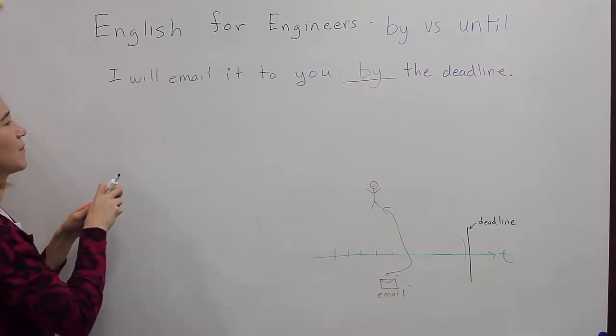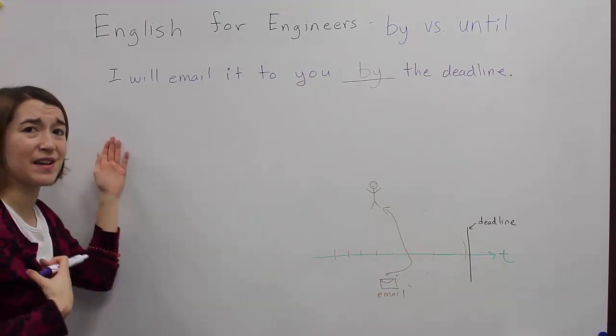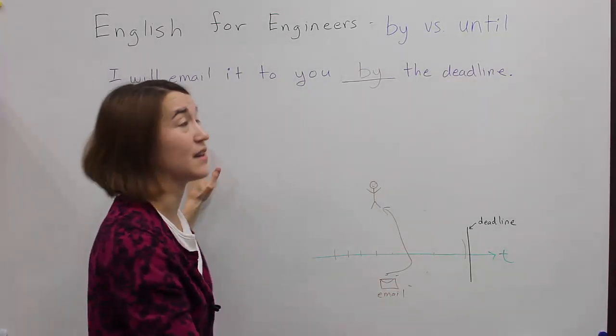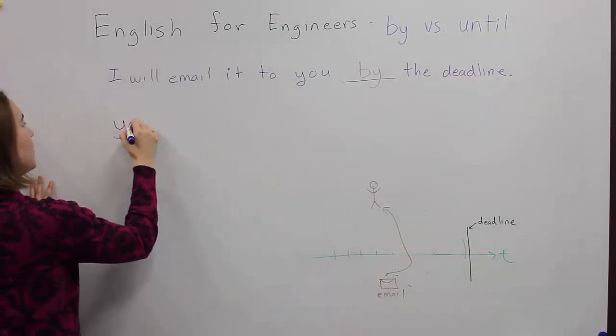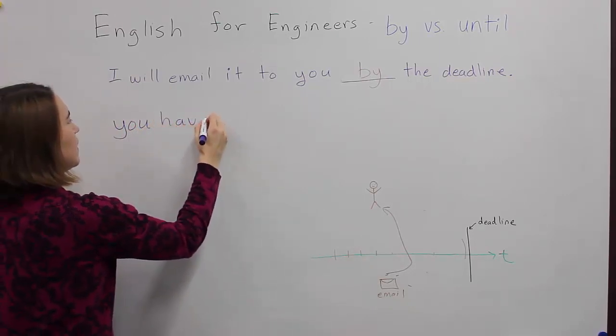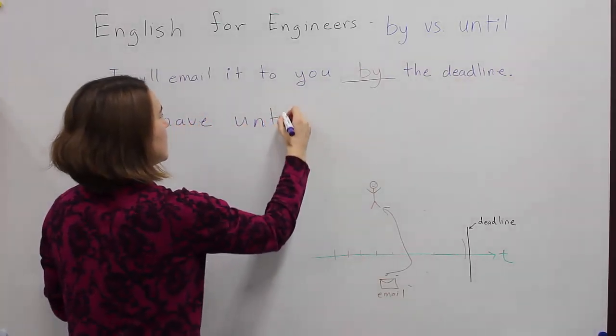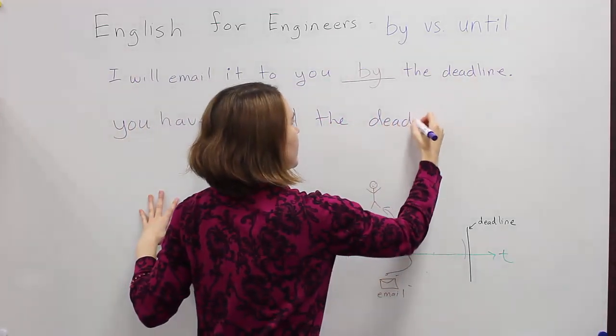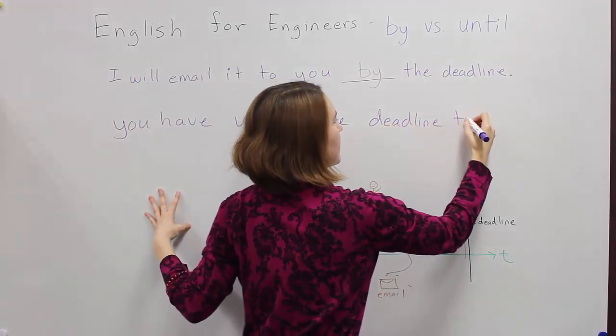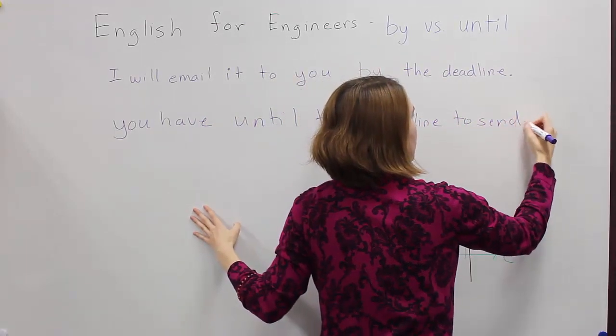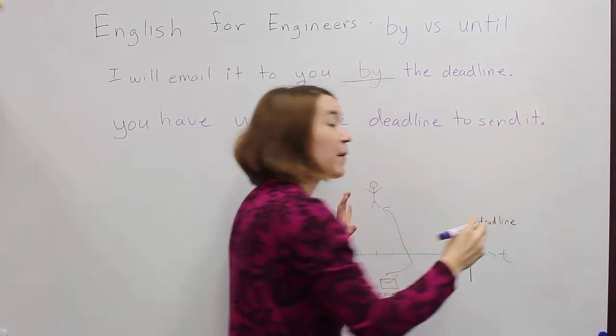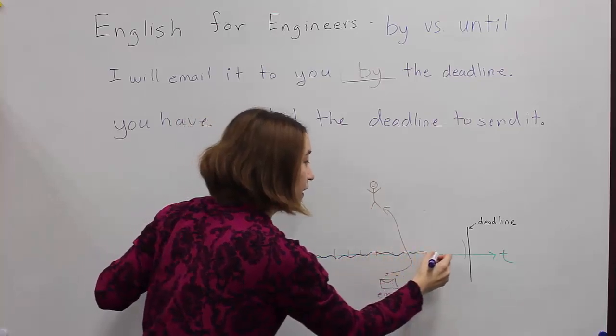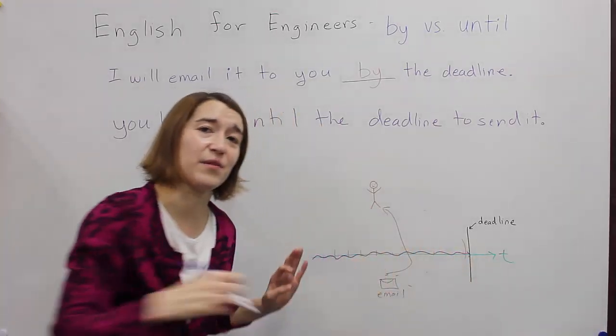If you want to change the sentence and use until, you can say... Actually, I would say to you, you have until the deadline to send it to me. So you have until the deadline to send it. So that means you continuously, any time up to this point, you can send it and I will accept it.